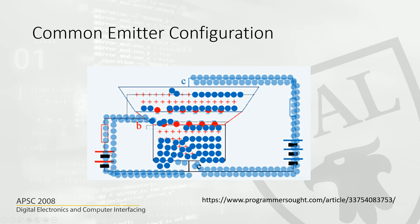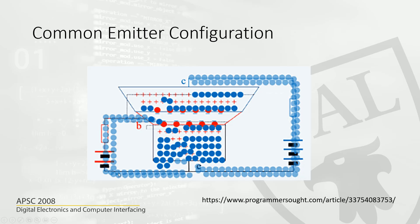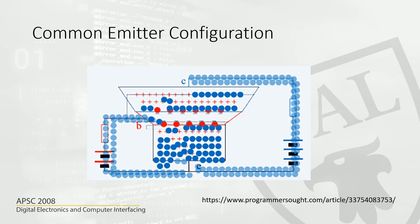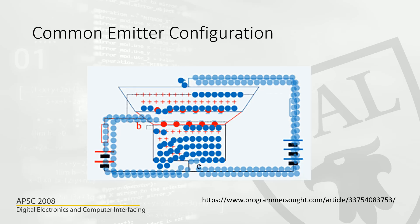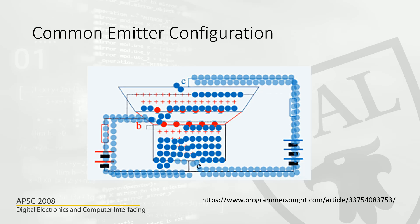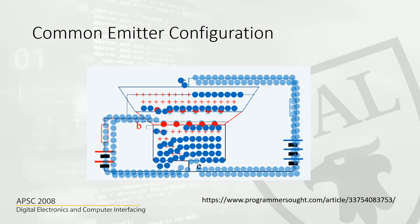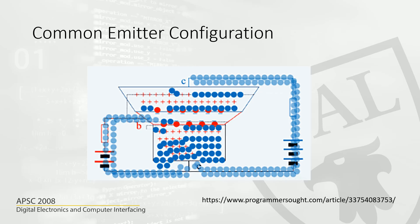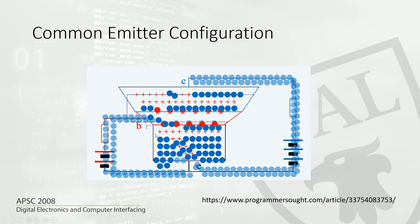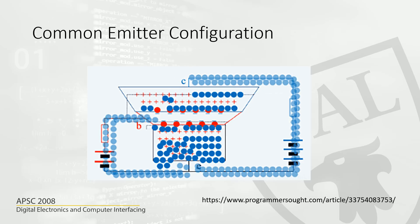When you apply a little more current through the base, even more current flows through the emitter and collector. When you apply a very small base current, a proportional but much larger current flows through the collector and emitter. So there is amplification happening — a small amount of current or voltage to the base gets amplified and appears across the collector and emitter. This is the amplification mode.